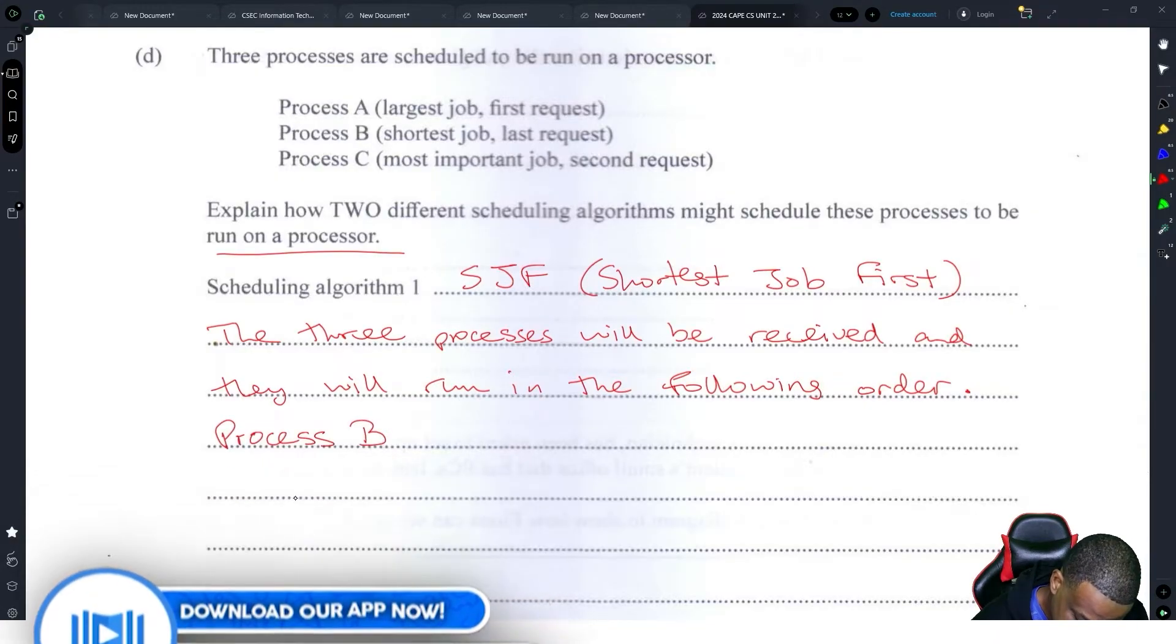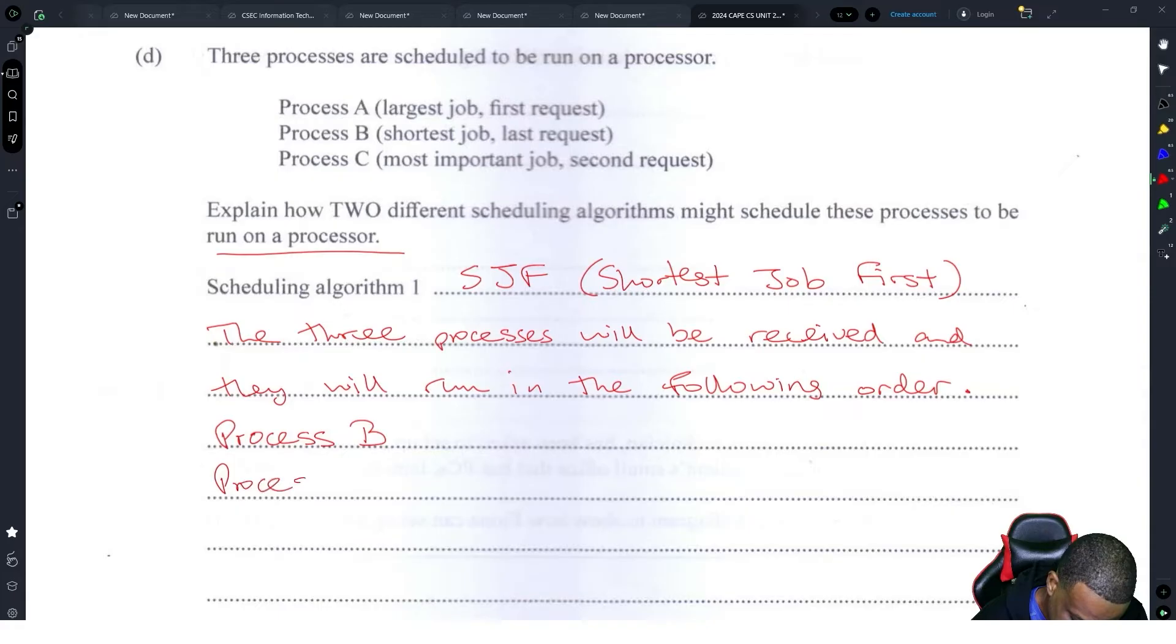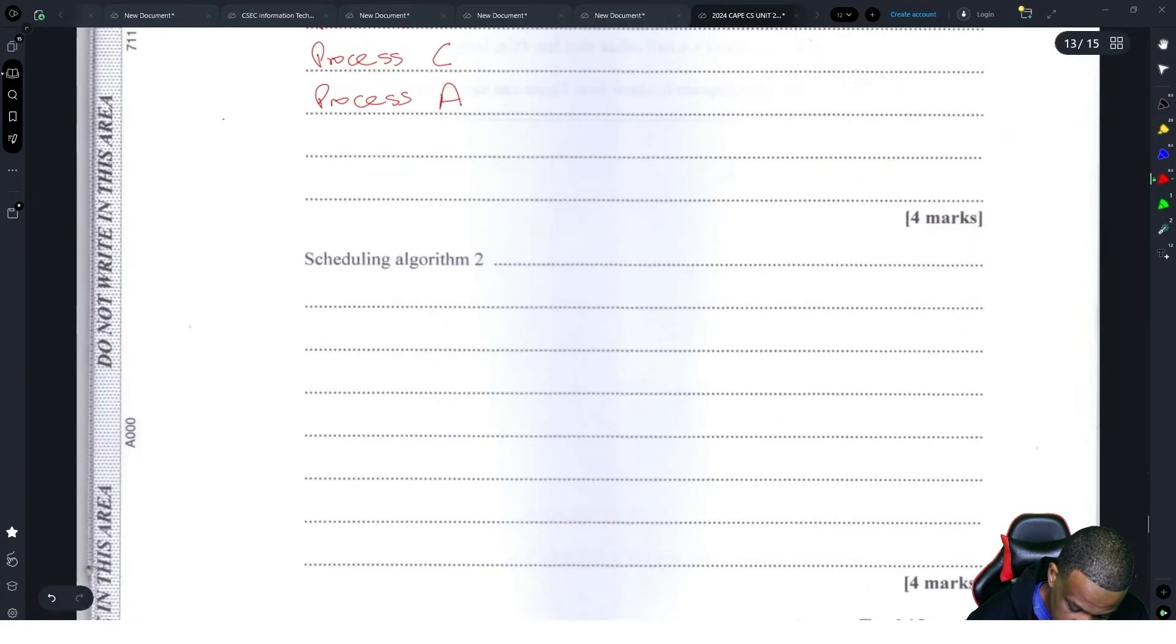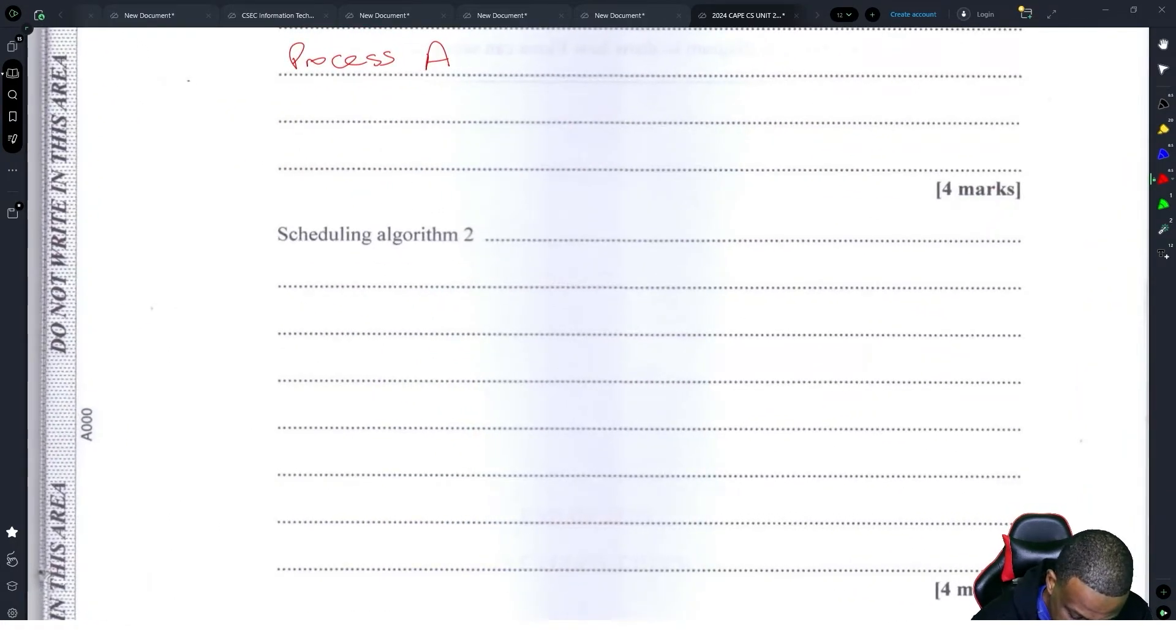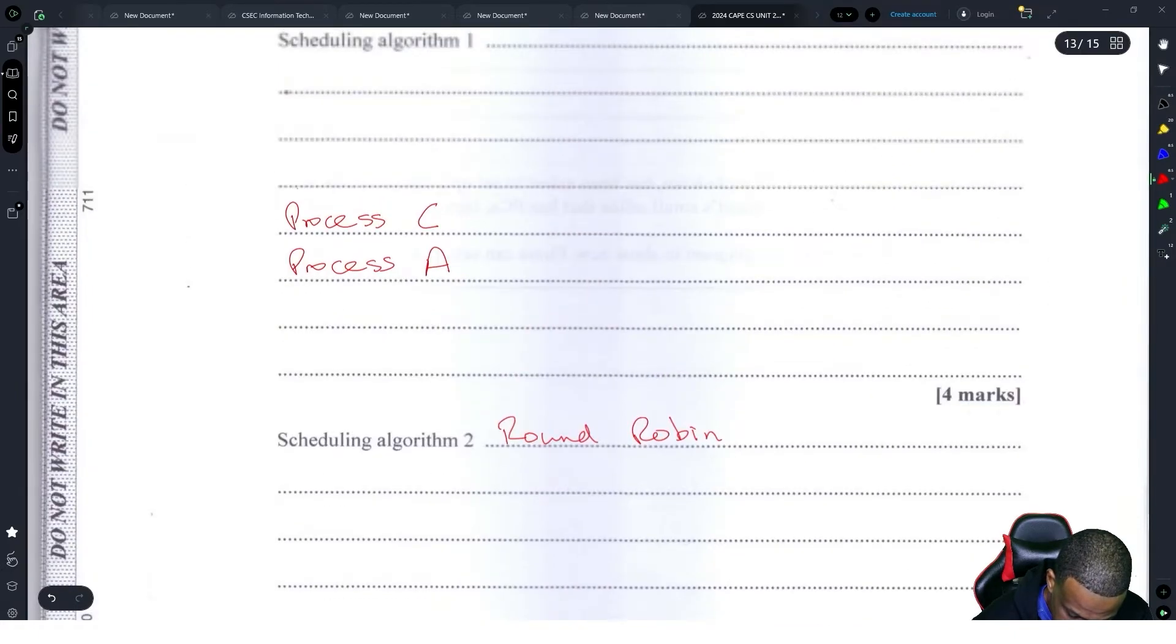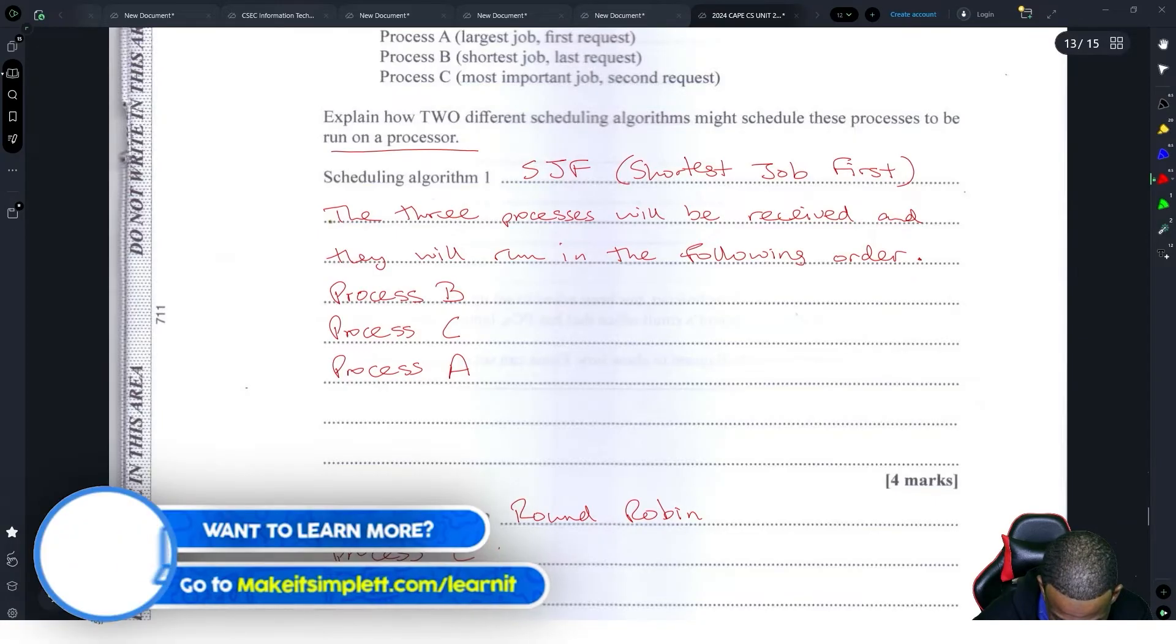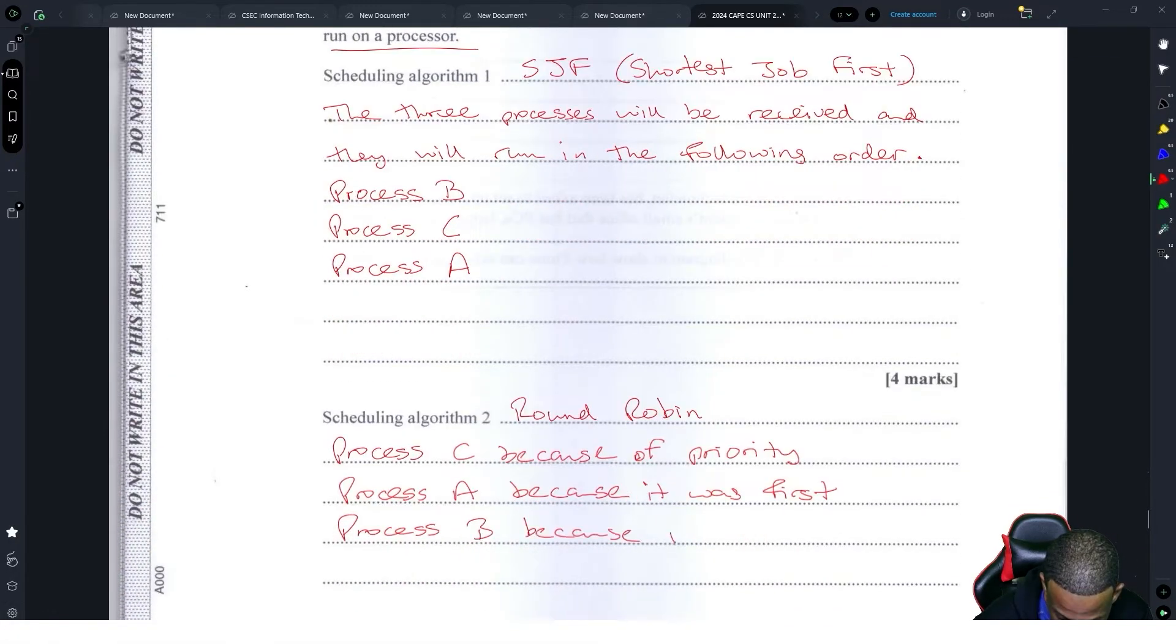So that's the shortest job. Process C, because it's not the shortest one, and then process A. That's the shortest job first. Next one we could use is Round Robin. Round Robin will go process C because of priority.